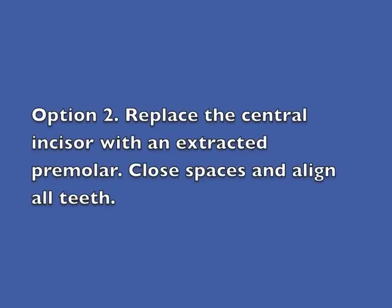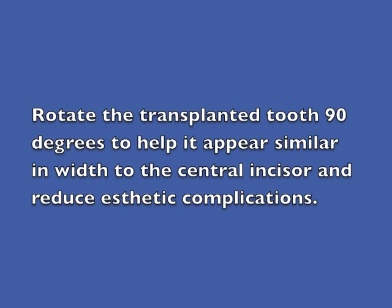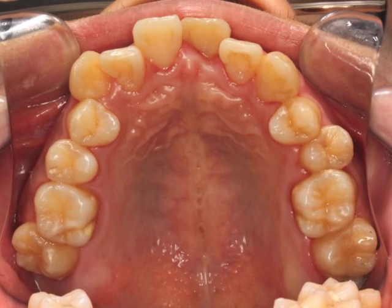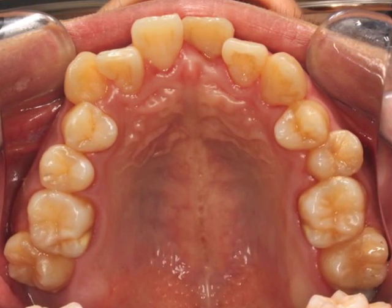Option number two: replacement of the central incisor with one of the extracted first premolars, then continue conventional orthodontic treatment to close spaces and align all remaining teeth. A 90-degree rotation of the premolar when being auto-transplanted would help it appear similar in width to that of the central incisor and make the aesthetic complications reduced. If this plan was chosen for the patient, another concern would be the need to create additional space for placement of the premolar in the anterior portion of the maxilla where the teeth are already crowded.